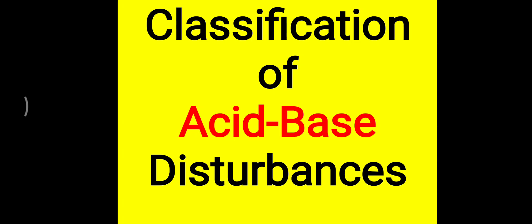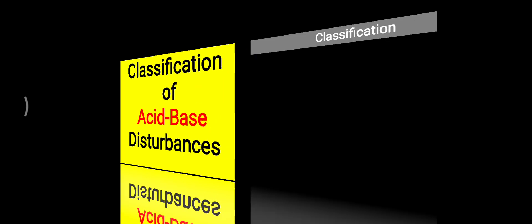Friends, today's topic is about classification of acid-base disturbance — how this acid-base disturbance is classified. First of all, we have to know the normal pH range. The normal pH range is around 7.4, ranging from 7.35 to 7.45.